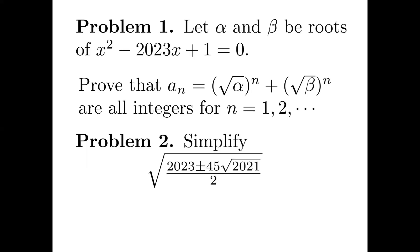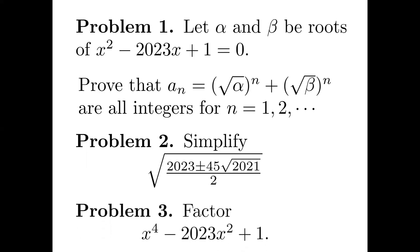The second problem: we want to simplify a nested square root — the square root of 2023 plus or minus 45 times the square root of 2021, divided by 2. The last one: factor the quartic polynomial x to the power 4 minus 2023x squared plus 1. These three problems are closely related. We are going to solve the first one and the other two naturally follow — it's a deal of buy one, get two free.